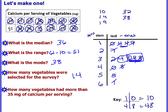How many vegetables had more than thirty-five milligrams? We need to find thirty-five. Here's my thirties: thirty-two, thirty-four, thirty-eight. So if we had a thirty-five, it would fall between the four and the eight — between thirty-four and thirty-eight. We want to know how many are more than thirty-five, so count the leaves: one, two, three, four, five, six, seven. These are more than thirty-five because they're the forties, the fifties, and the sixties.